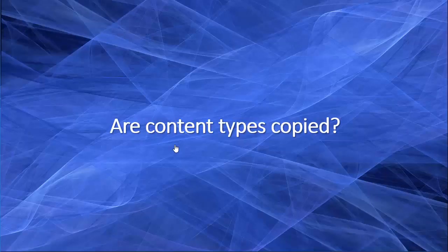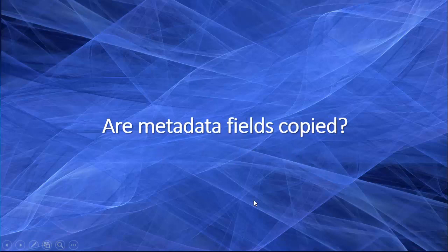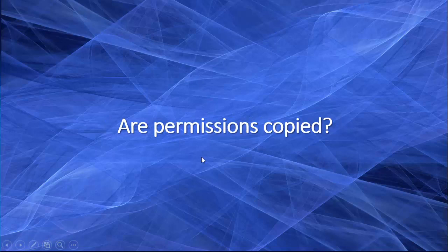So the first question is answered: are the content types copied? Yes, content types are copied as long as we have them in the hub. Metadata fields? Yes, we noticed that they are copied. Now we come to the most important part - how about the permissions? When we copy the files, does it copy the permissions? There is one way to find out, and that is going to our libraries and seeing.